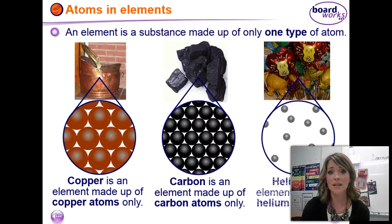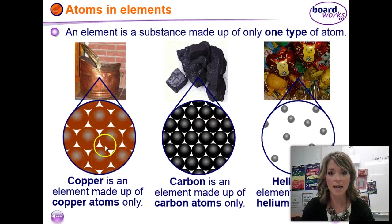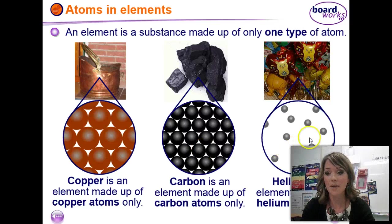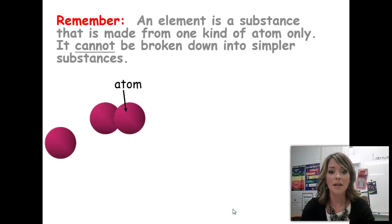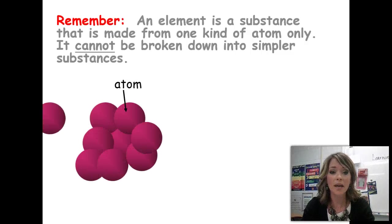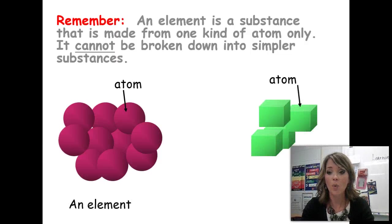But there are some substances that only contain one kind of atom, and those types of substances are an element. We've already talked about the periodic table of elements, and everything on the periodic table is a substance that contains only one type of atom. Copper is only made up of copper atoms. Carbon is another element — it has only carbon atoms. And helium is an element because it's only made up of helium atoms. Because it's only made up of one kind of atom, an element cannot be broken down into anything else.